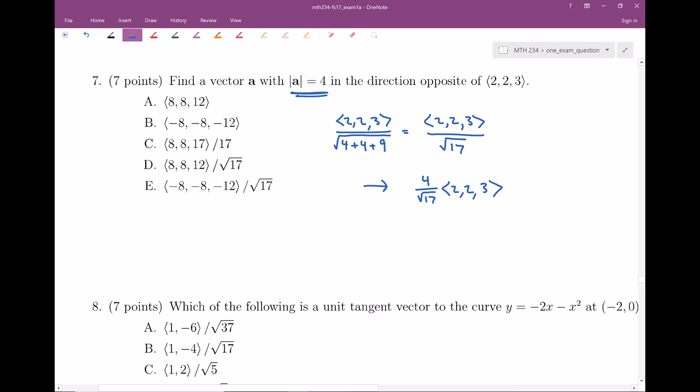And now, this is in the same direction as <2, 2, 3>. If I want it to be in the opposite direction, then I multiply by negative 1 to flip the vector. So I multiply this by negative 1 so it's going in the opposite direction.